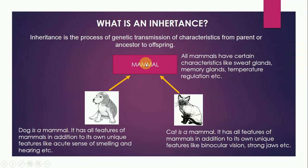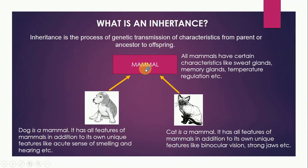If we take examples of two mammals, suppose dog and cat, both of them are mammals. If dog is a mammal, it has all features of mammals in addition to its own unique features like acute sense of smelling and hearing. That is, dog is inheriting all the features of the mammal class, and in addition to these features it has certain features which are unique to dogs only, that is acute sense of smell and hearing.